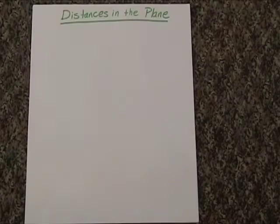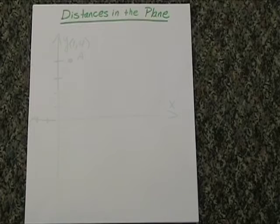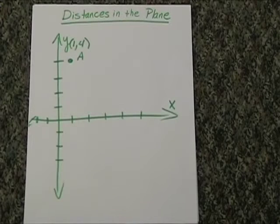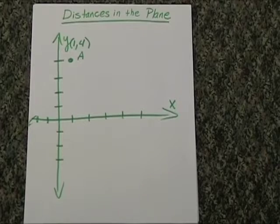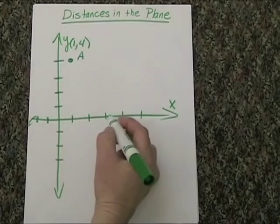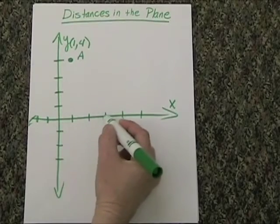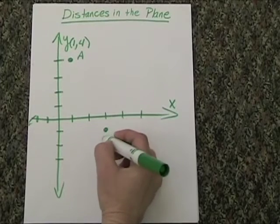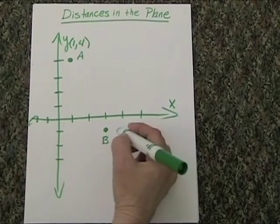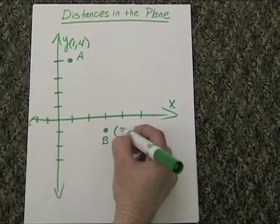Today we're going to talk about how to find distances on the coordinate plane. Let's say we have point A located at (0,0), and let's put another point down here. We'll call this point B at (3,-1).